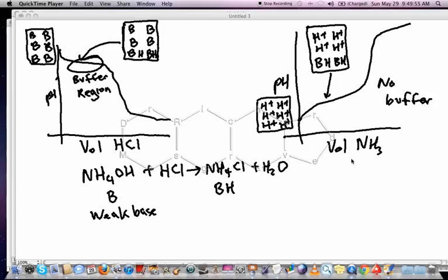If we take the reverse case where we're going to titrate a strong acid with a weak base, we start off with six moles of strong acid, six H+'s here. As we add the NH3, say two of them, then two of the bases will react with two of the acids and form two BH's.